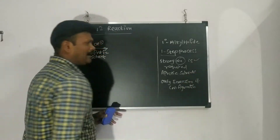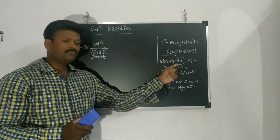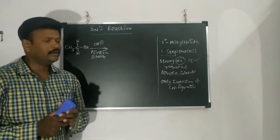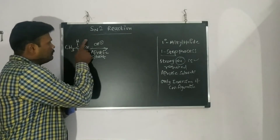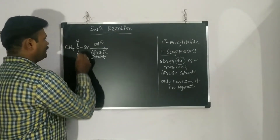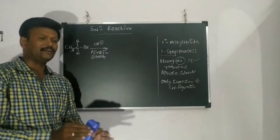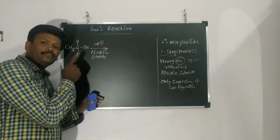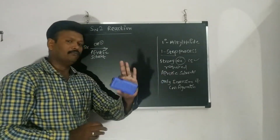In SN2, a strong nucleophile is required. This is because the reaction entirely depends on both the nucleophile and the substrate. The strong nucleophile must directly attack the carbon and displace the leaving group (Br⁻). In SN1, a 3° alkyl halide has steric hindrance, so OH⁻ cannot attack directly. But in SN2, with a 1° halide, OH⁻ is able to attack directly. Therefore, a strong nucleophile is absolutely needed.